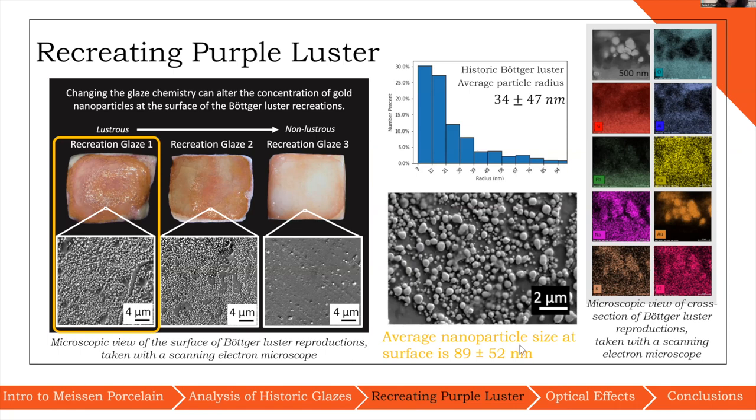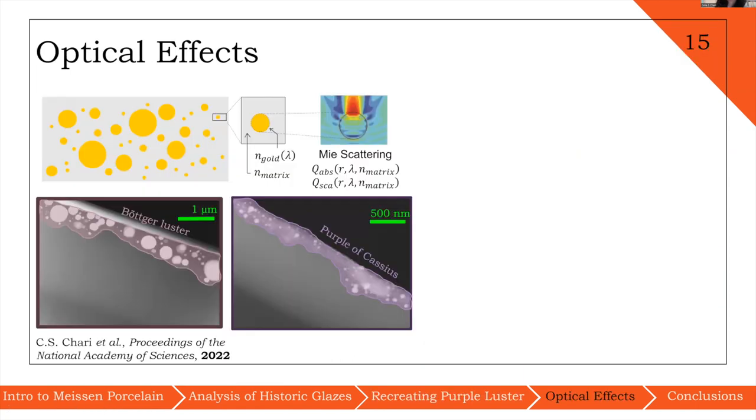Looking at the average nanoparticle sizes, even though it is larger than what we've seen with historic Böttger luster, it still has a very similar deviation. So we can solve the question of what makes a purple colorant lustrous or not by looking at the nanoparticle arrays and studying how these structures interact with light to produce different optical effects.